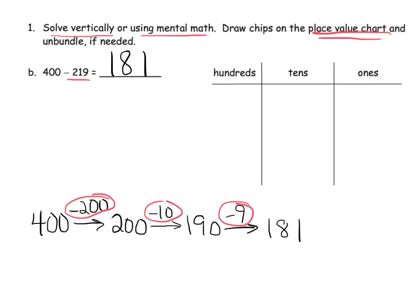Instead of just doing it using the vertical method, now we also need to do the place value chart because that's what the directions say. So we've got four hundreds — one, two, three, four hundreds.